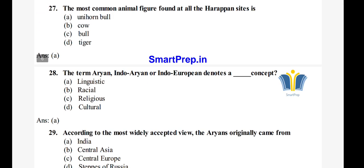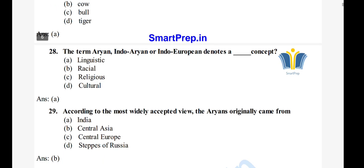Question 29: According to the most widely accepted view, the Aryans originally came from — A) India, B) Central Asia, C) Central Europe, D) Steppes of Russia. The right answer is option B, Central Asia. The most widely accepted view is that the Aryans came from Central Asia.